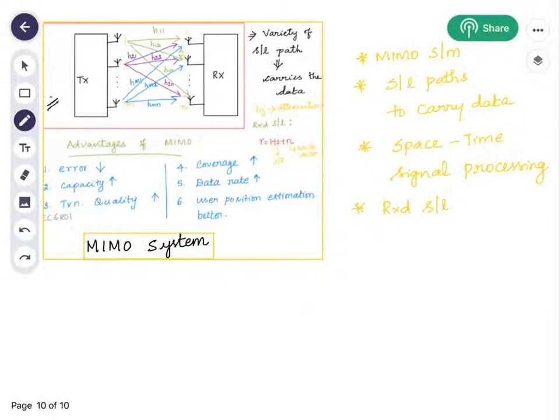Hi, this is a MIMO system which comprises of transmitter section and receiver section. In the transmitter section there are M number of antenna elements and in the receiver section there are N number of antenna elements.